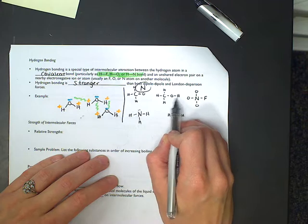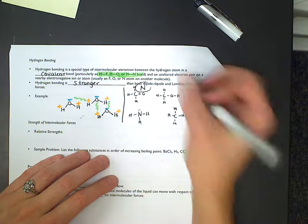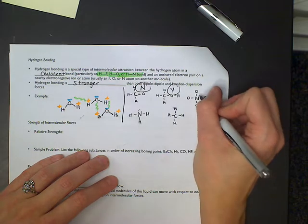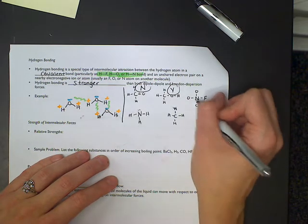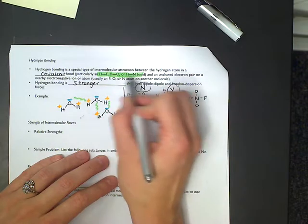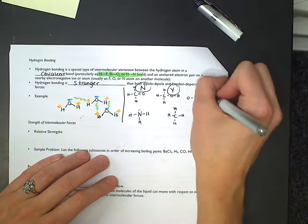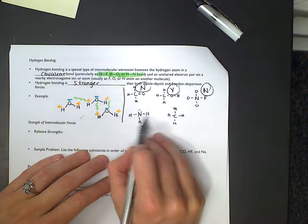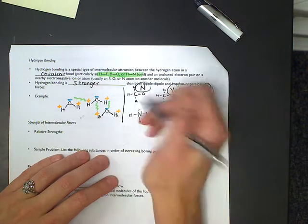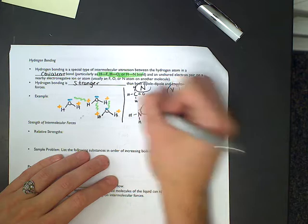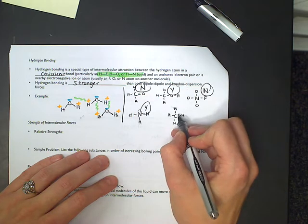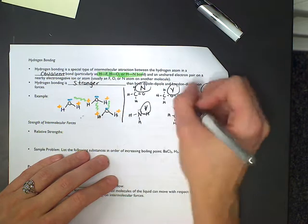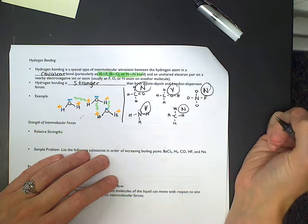Here, we do see an O bonding to an H, which is one of the required bonds, so this one would yes have hydrogen bonding. Here, we don't even see a hydrogen anywhere — we see N's, O's, and F's, which are definitely things we need to see, but we don't see any hydrogens, so this one would be no. Here, we see N bonding to H, which is a required bond, so this one would be a yes. And here, we see a bunch of H's but we don't see H binding to F, H binding to O, or H binding to N, so the answer here is no.